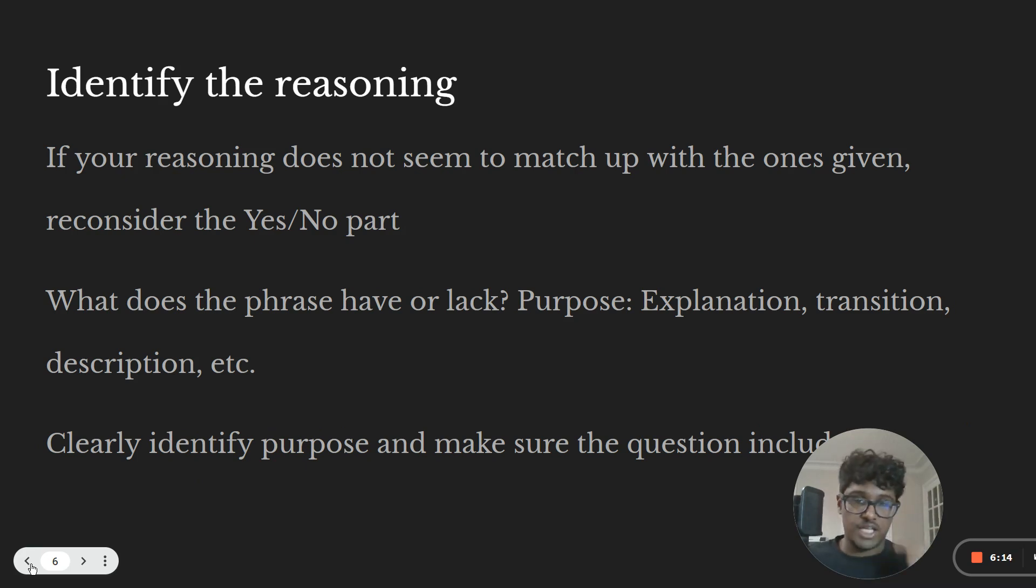So to really figure out what the reasoning is, first, we need to relook at our phrase. We've already determined that the phrase is either good or it's bad. It belongs there or it doesn't. But what's the phrase's purpose or lack of purpose? Does it explain something? Is it a transition phrase? Does it describe something that happens before or after? Does it set up a series of events in a timeline? You need to clearly identify the purpose and make sure that the question includes that specific purpose.